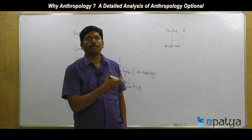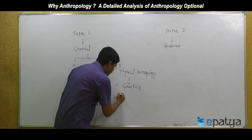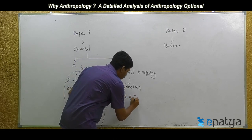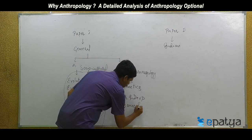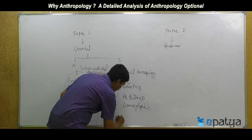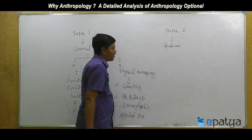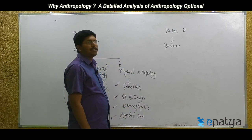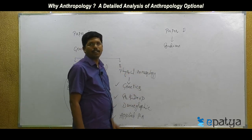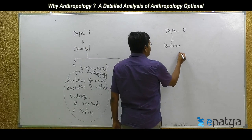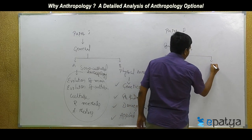Applied physical anthropology is part and parcel of physical anthropology. So in Paper 1 we first study genetics, then growth and development, then demographic physical anthropology, and finally applied physical anthropology. This is about Paper 1 — General Anthropology — in which socio-cultural and physical anthropology are covered. As far as Indian Anthropology is concerned, it can also be divided into Section A and Section B.